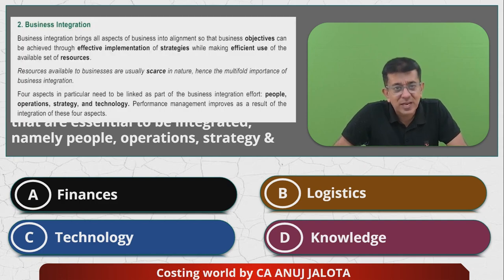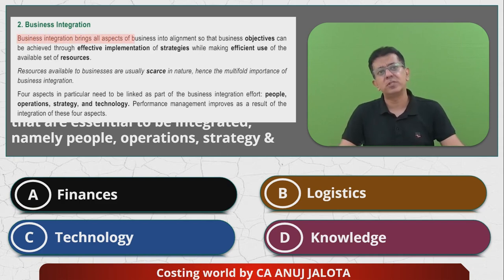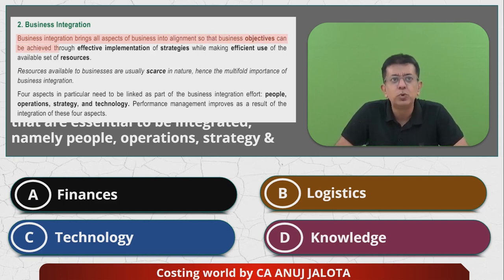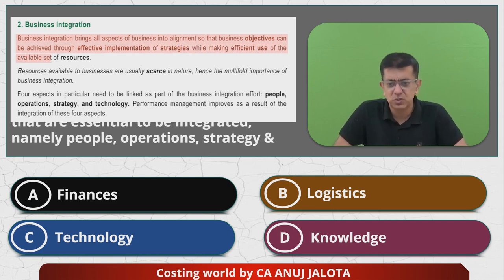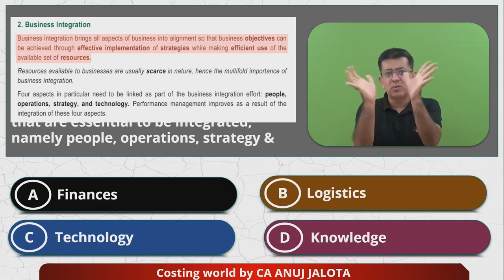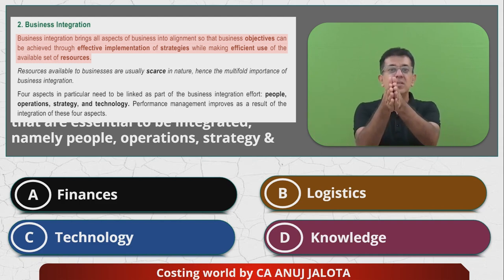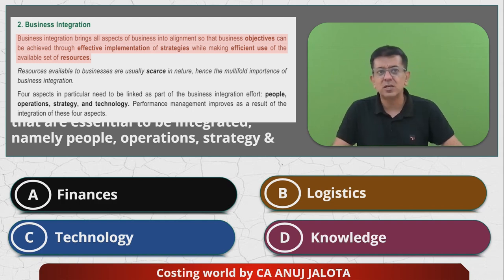So the extract from your module is there in front of you right now. Business integration brings all the aspects of the business into alignment — the same words — so that business objectives can be achieved through effective implementation of strategy while making efficient use of the set of resources. You will understand that there are a lot of things in a business, and everything has to be aligned to your strategies, because four people in an organization cannot be working in four different directions. An organization works well only if everybody works in the same direction to accomplish the strategies you have made.